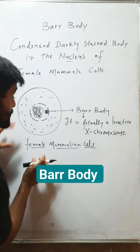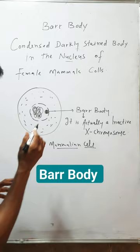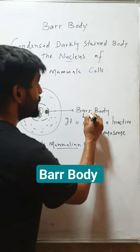This is a female mammal cell. Here in this cell, this is the nucleus part. In this nucleus you can see this body — this body is darkly stained and very compact. This body is called Barr body, and this body is actually an inactive X chromosome.